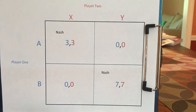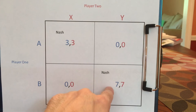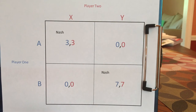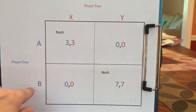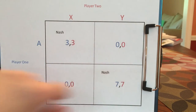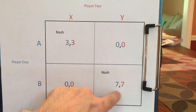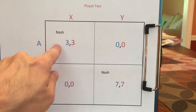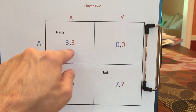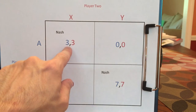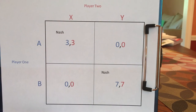This game has two Nash Equilibria. If player two plays Y, player one doesn't regret playing B, and if player one plays B, player two doesn't regret playing Y — so BY is a Nash Equilibrium. But AX is also one, and often when students first encounter games like this, they really resist — they think I've made a mistake. First, let me say there's a difference between whether an outcome is reasonable and whether it's a Nash Equilibrium.